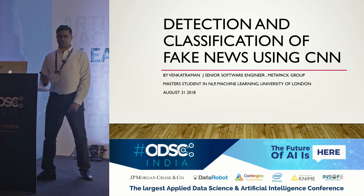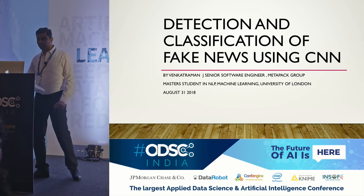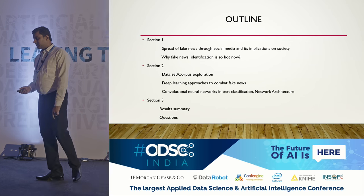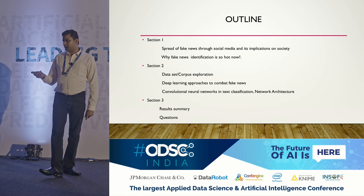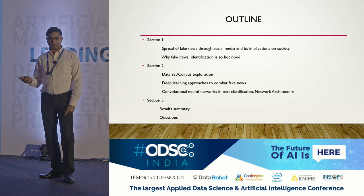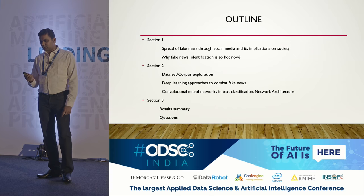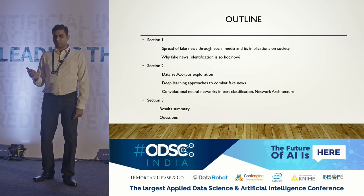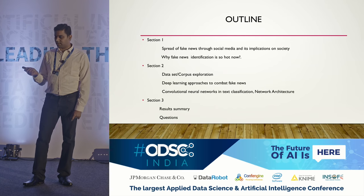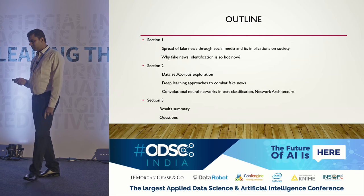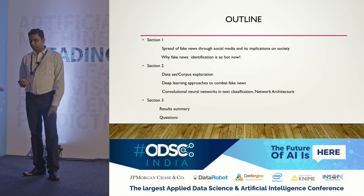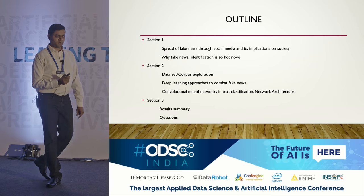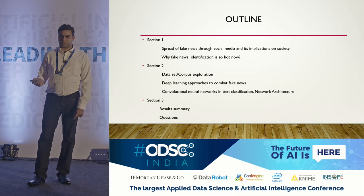If I'm going too fast at any point, please raise your hands and I'll slow down. The outline is: in section one we talk about why fake news is more important now and what are the implications. In section two, which is my own masters project work, I'll go through the network architecture I used and the deep learning approaches to combat fake news. In section three we'll have the results summary, and if we have time we'll take some questions.